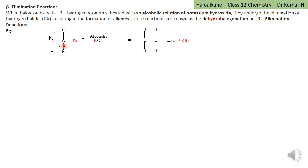In this case, the alpha carbon is electropositive because Br has taken away the electrons from the carbon. As a result, the alpha carbon loses electrons. When it loses electrons, it doesn't remain like that — it will attract electrons from the neighboring carbon. The neighboring carbon is the beta carbon.